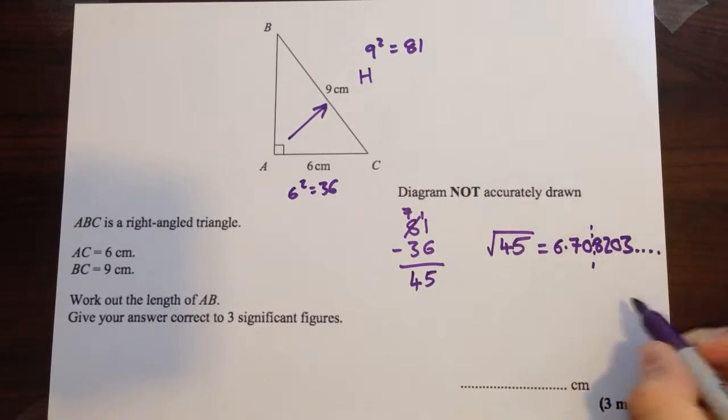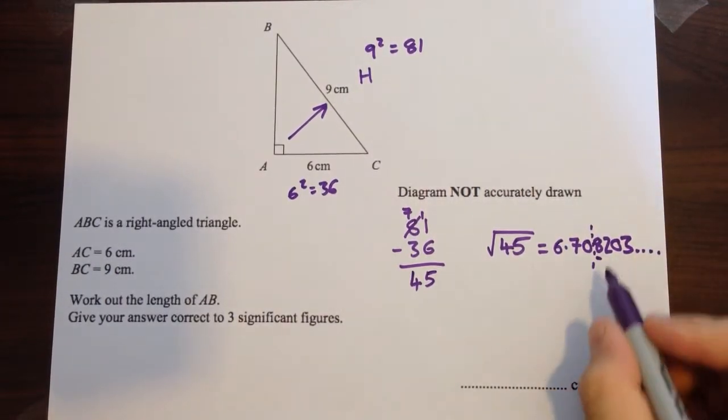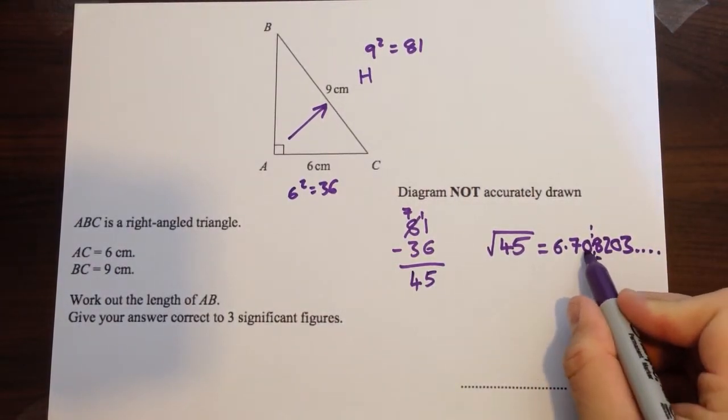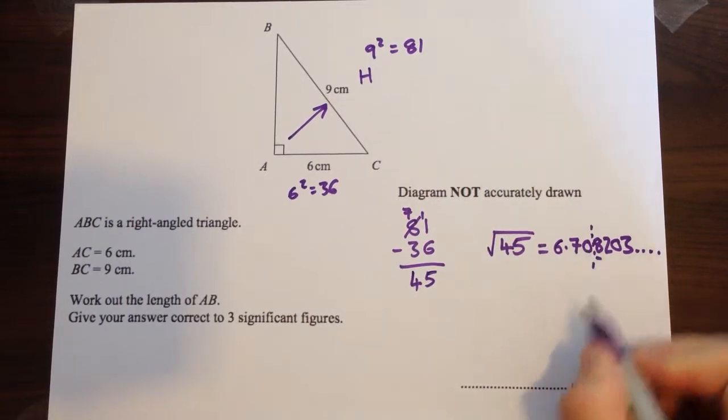Check the number after the cutoff point, this time it's bigger than 5, so that will affect this 0, that's going to change it to a 1, so the answer is 6.71 cm.